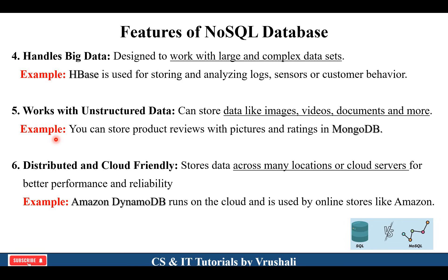NoSQL database also supports unstructured data — it can store different images, videos, documents, and more different formats in one place. MongoDB is one of the most popular databases for this purpose. The next feature is distributed and cloud-friendly. Suppose a particular database is hosted on a US server, but you can use this database from India. This means they provide a distributed and cloud-friendly environment where you can access data from different locations efficiently, with good reliability.